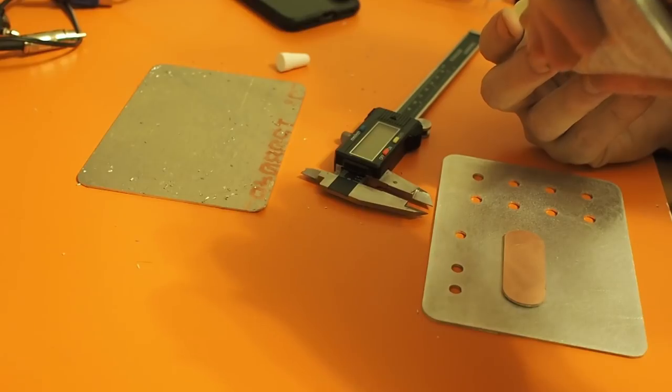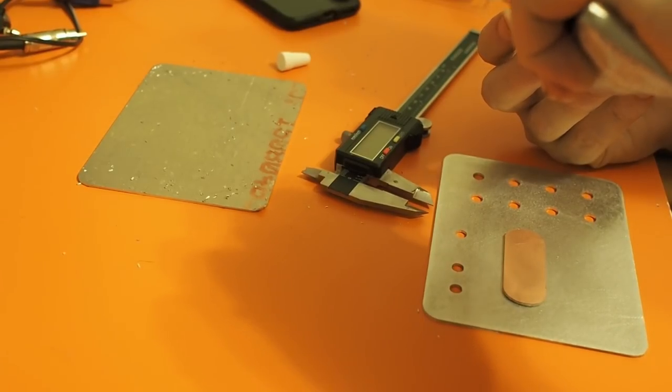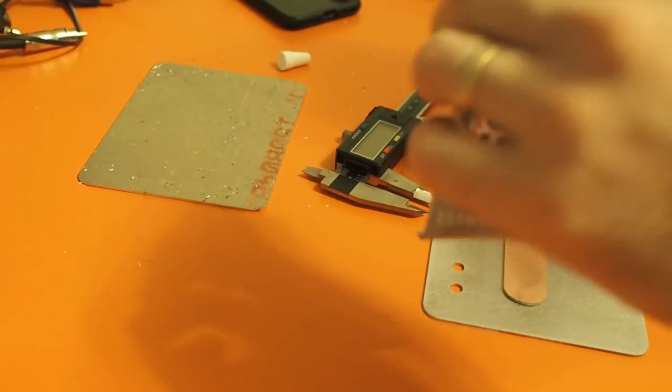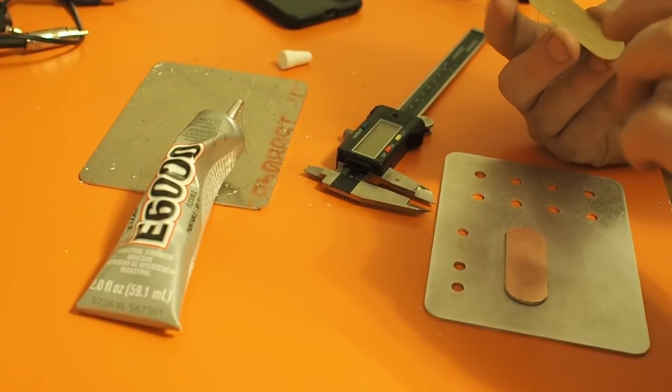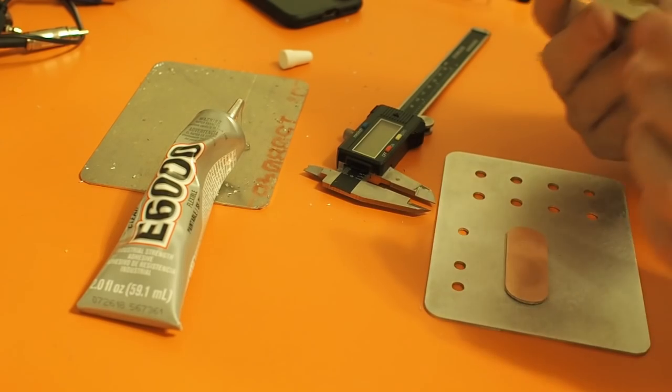All other glues are number two or lower. E6000 is number one. You can glue anything to anything with that. So I'm gluing the PCB pads I cut out so the copper side is up,